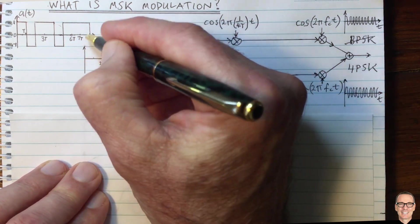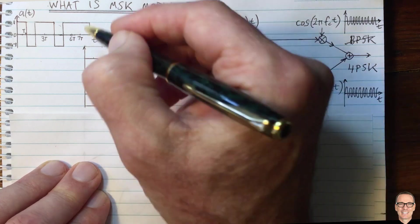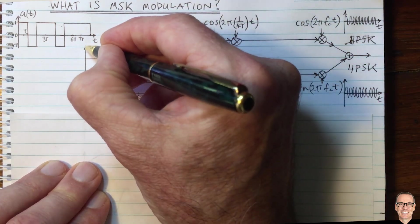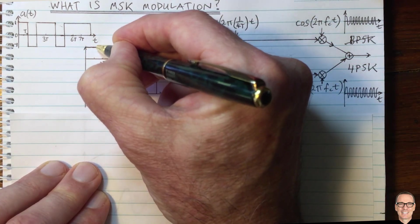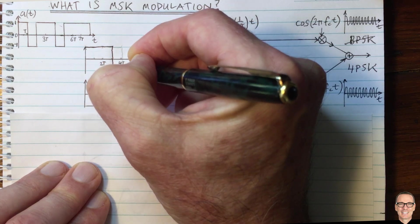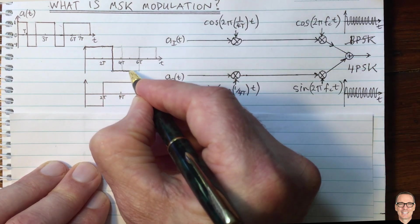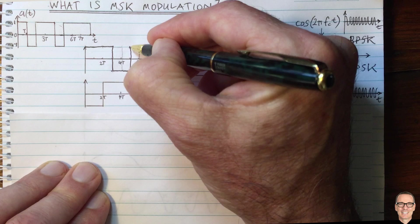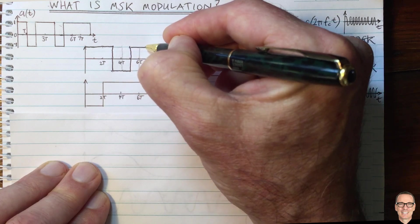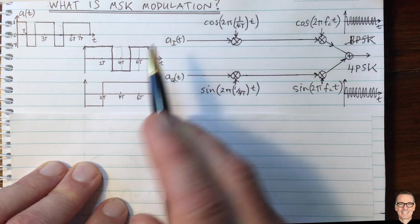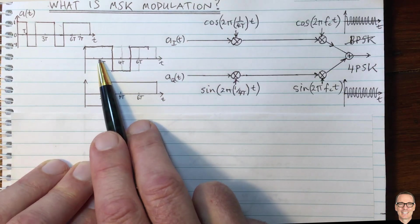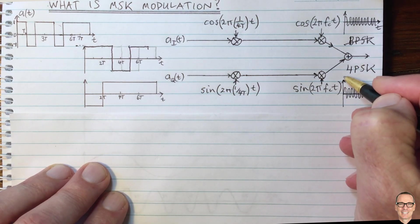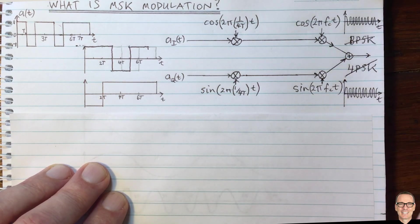This time offset means that instead of the original in-phase sequence, the signal transitions happen T earlier. This gives us MSK, not 4PSK, even though the structure is very similar and we're still using the cosine and sine high-frequency carriers.